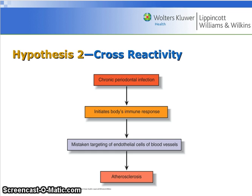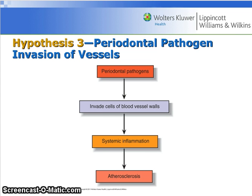Cross-reactivity is where the chronic periodontal infection initiates the body's immune response and it mistakenly targets the endothelial cells of the blood vessels, causing atherosclerosis. The invasion of vessels theory states that periodontal pathogens invade the cells of the blood vessel walls, causing systemic inflammation and thus leading to atherosclerosis.